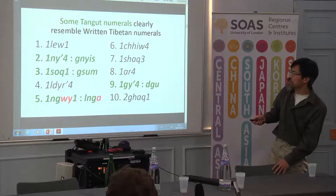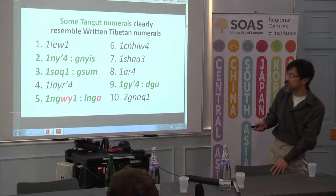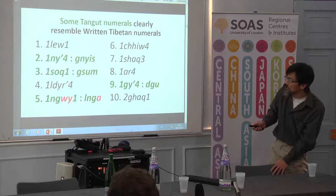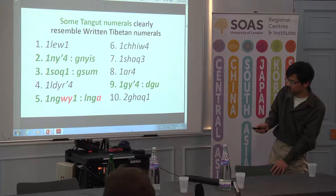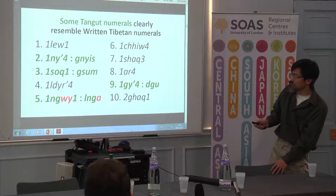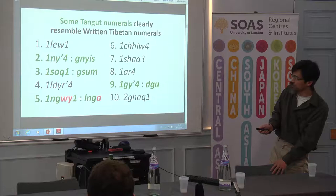One pair that has bothered me for over twenty years, which is the subject of today's talk, is the number five. You can see in two, three, and nine there's a pretty close resemblance. With five there's something strange going on — there's a W in the Tangut that corresponds to nothing in Tibetan. In the other cases they have similar vowels: U and E, O and U, U and U — kind of close. But U and A are quite different, and then there's this strange W. So this has bothered me for over twenty years.